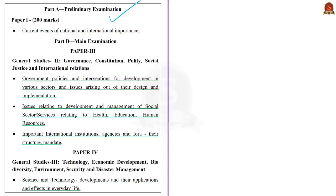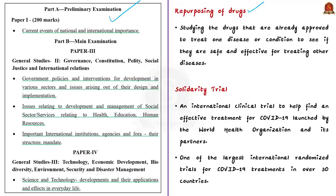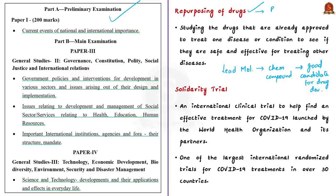Let us understand what is meant by repurposing of drugs. We all know that the traditional drug development process consumes time and resources immensely, and despite huge investments, the chances of a lead molecule to enter the open market are often minimal. Here, lead molecule refers to a chemical compound which might prove to be a good candidate for drug development. So in such cases, one viable option is drug repurposing. Drug repurposing or drug repositioning is studying drugs that are already proved to treat one disease or condition to see if they are safe and effective for treating other diseases.